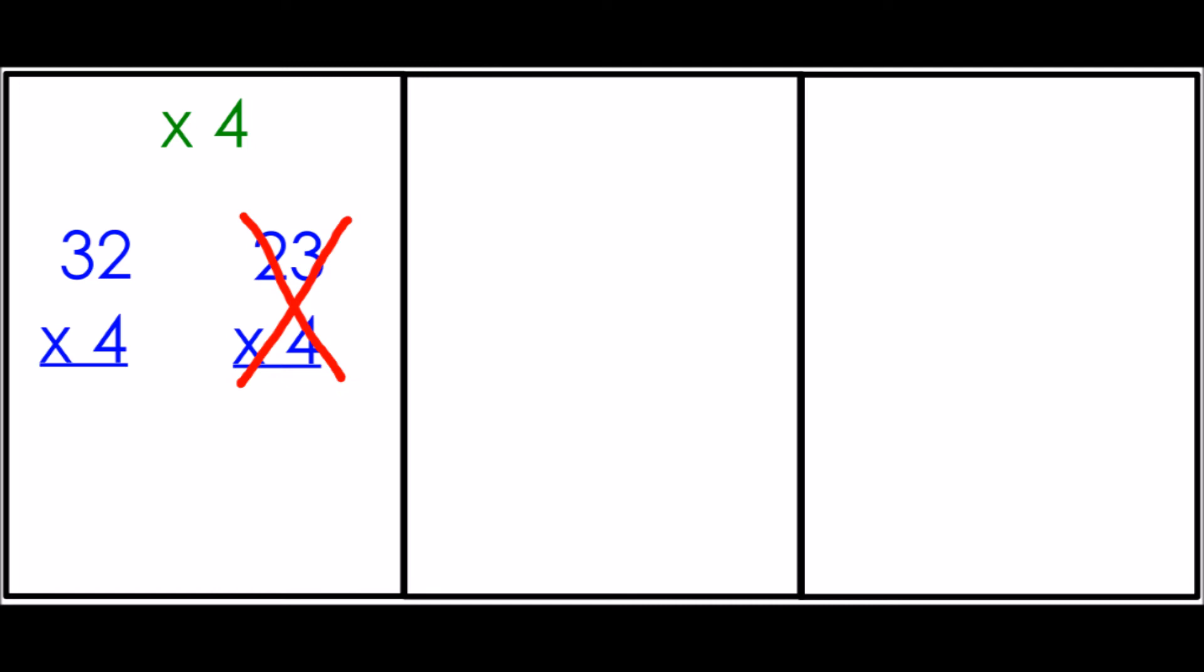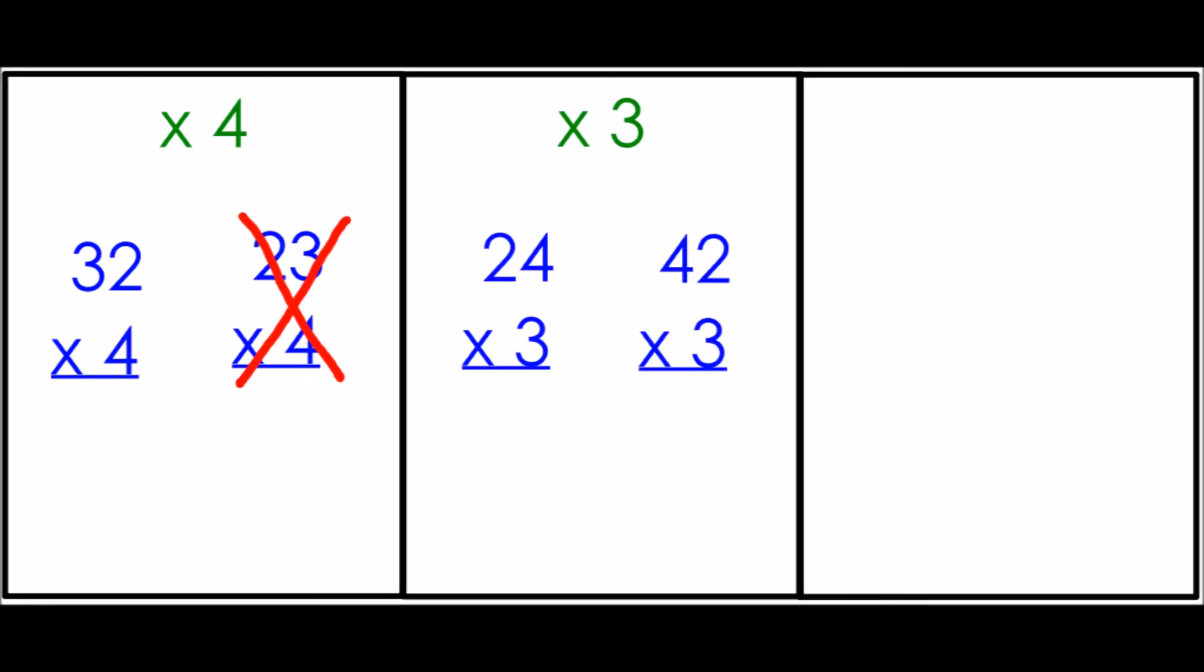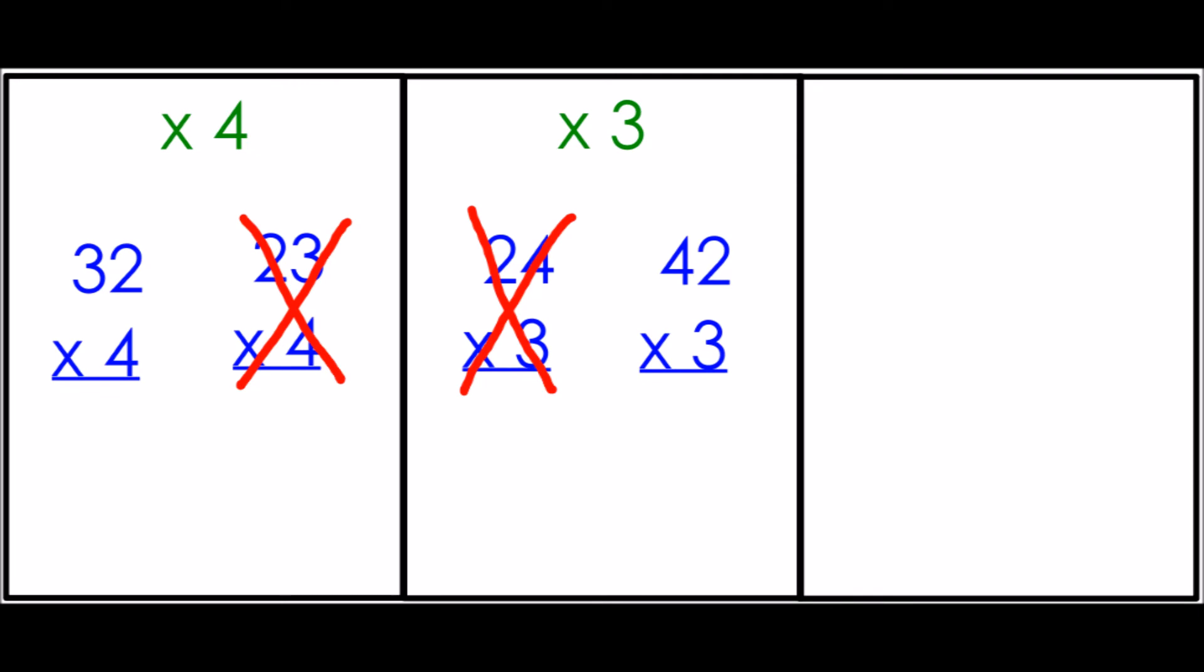Next I have times three. So I can either do two and four or the other digits left. So I could do 24 times three or 42 times three. Again, looking at both of those, I know that 42 times three is going to be greater than 24 times three. 42 is greater than 24 and they're both multiplied by three. So I'm going to cross out 24 times three.